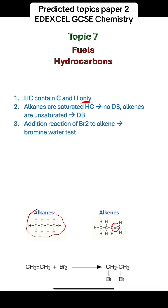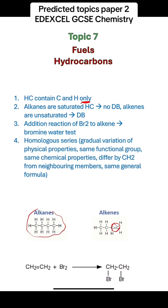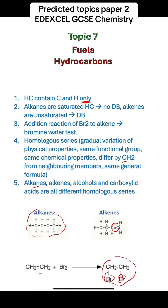Remember the addition reaction of bromine to an alkene, and you should be able to draw the product where bromine is added across the double bond. Remember the homologous series — a very common exam question. A homologous series is a group of compounds that all have the same general formula, show a gradual variation in physical properties, have the same functional group and therefore the same chemical properties, and differ by CH₂ from neighbouring members. Alkanes, alkenes, alcohols, and carboxylic acids are all different homologous series.